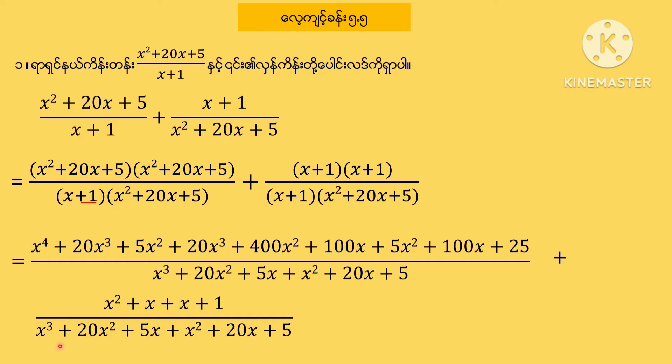x equals plus 20x squared plus 5x plus x squared plus 20x plus 5.